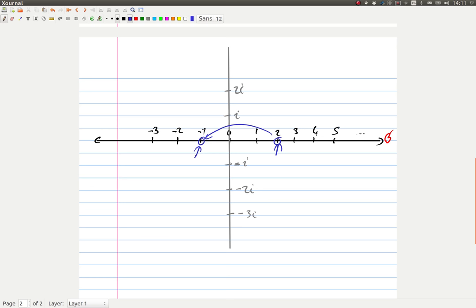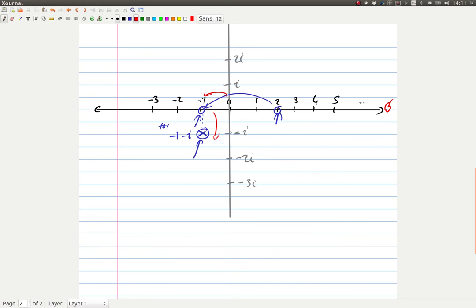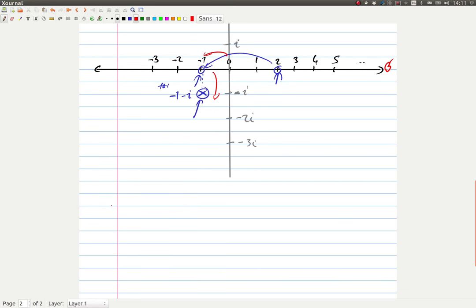And then the king took his tax, and that left us with minus one minus i apples right here. We've got minus one this way and minus i down here. And that's what a complex number is.